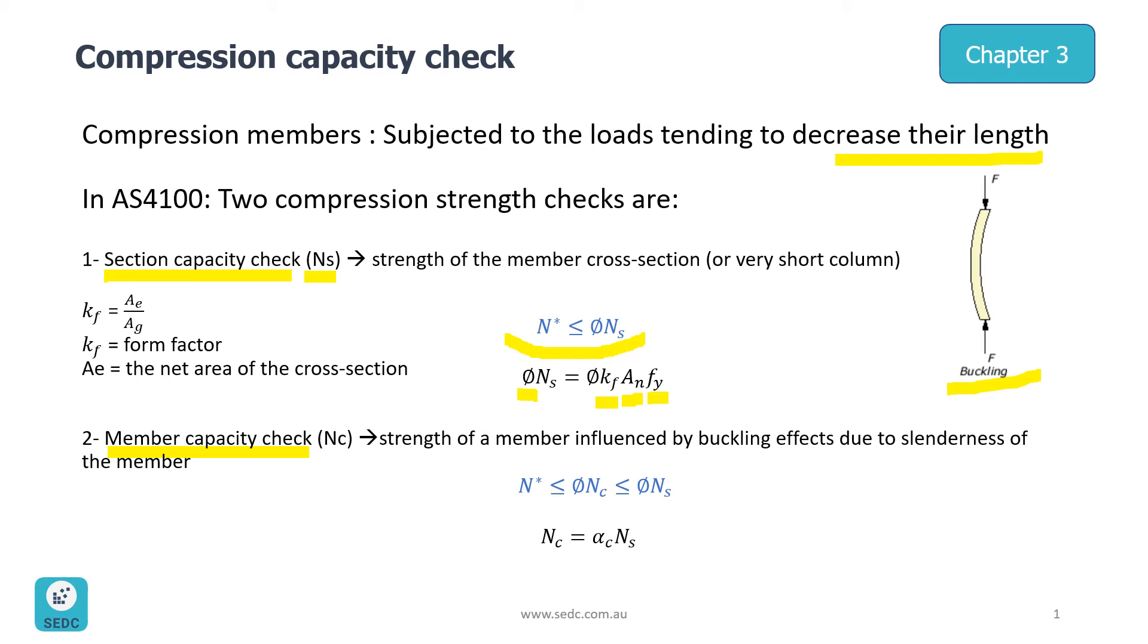Member capacity is defined as NC which is a strength of the member influenced by buckling effects due to slenderness of the member. The governing formula here is NS star has to be less than or equal to Phi NC.